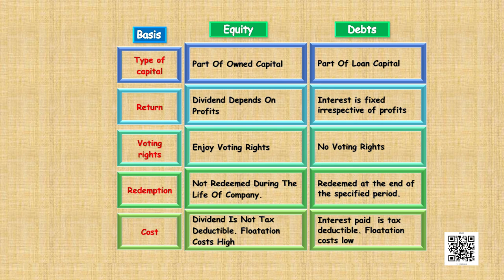On the basis of cost, the dividend paid to shareholders is the cost of equity, which is high because the risk associated with equity is also high. The cost paid to debt holders is interest, which is low because the risk of the debt holder is very less. Also, the interest paid to debt holders is a tax deductible expense.